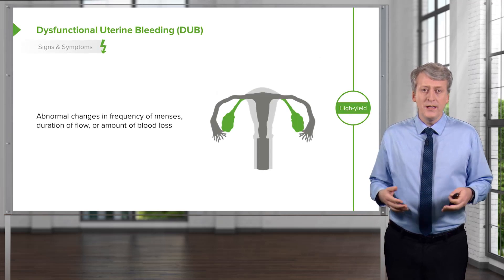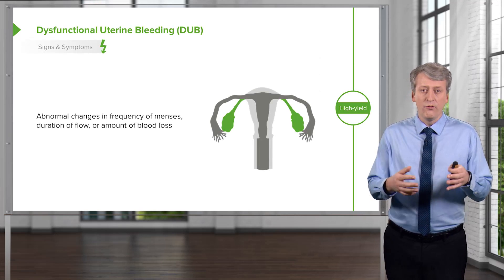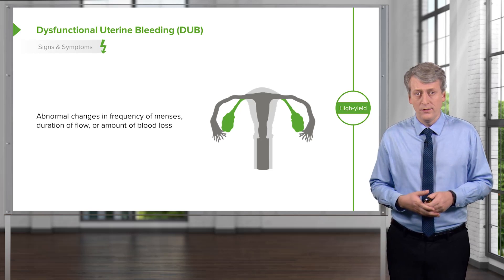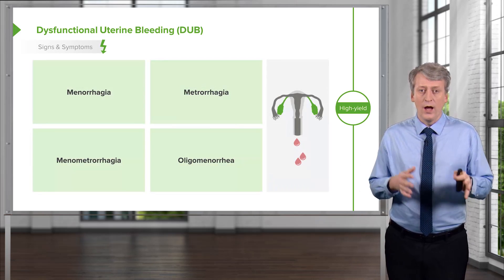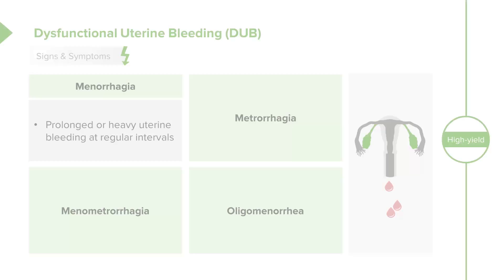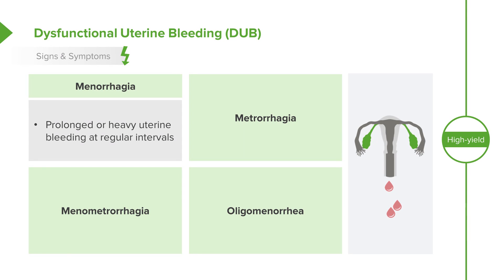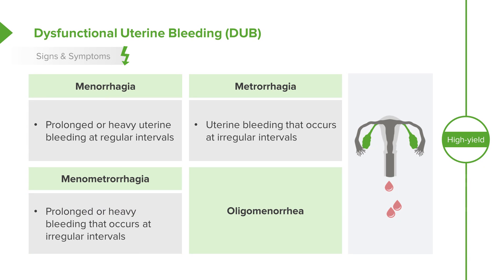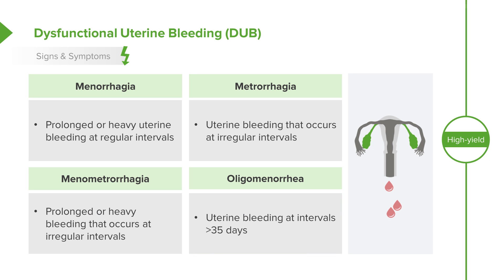Dysfunctional uterine bleeding is abnormal changes in the frequency, the duration of flow, or the amount of blood loss occurring in periods. We have different terms to describe different problems. Menorrhagia is prolonged or heavy uterine bleeding at regular intervals. Metrorrhagia is uterine bleeding that occurs at irregular intervals. Menometrorrhagia is prolonged or heavy bleeding at irregular intervals, and oligomenorrhea is uterine bleeding that happens at intervals more than 35 days — in other words, it's less common.